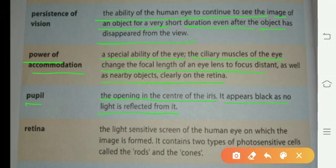Retina: the light sensitive screen of the human eye on which the image is formed. It contains two types of photosensitive cells called the rods and the cones.